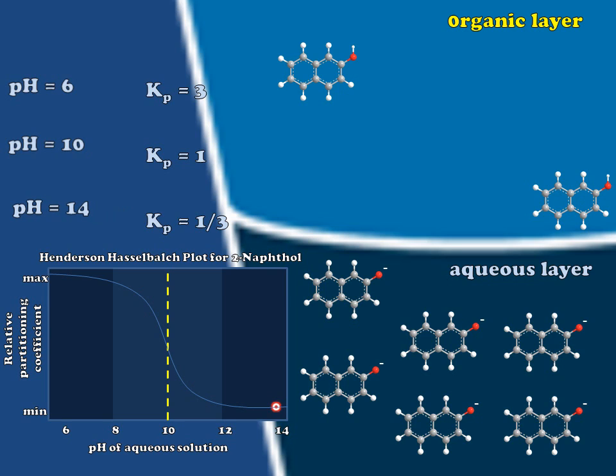The consequence here is very clear: that we can alter the pH of the aqueous layer in order to coax this molecule to concentrate in either layer, depending upon which one serves our purposes best.